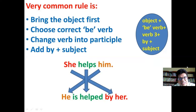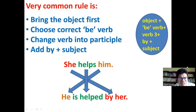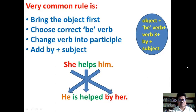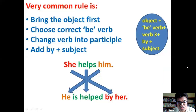The very essential and common rules for changing a sentence are: First, bring the object first — the object must be placed in front of the subject. Then, choose the correct auxiliary 'be' verb, which is very important because the 'be' verb changes according to the tense and structure. It is also affected by the subject, so follow the tense and the number and person of the subject.